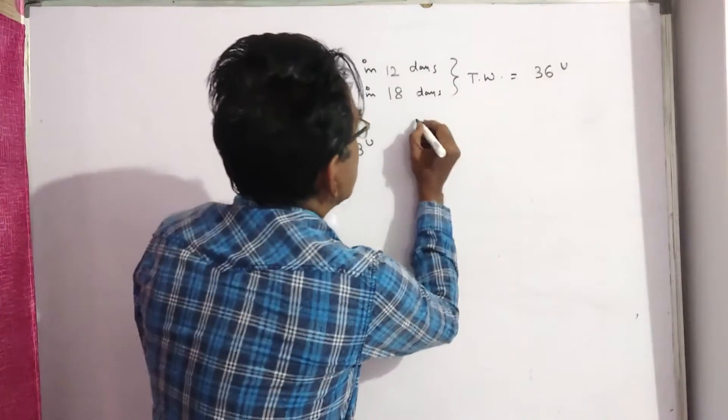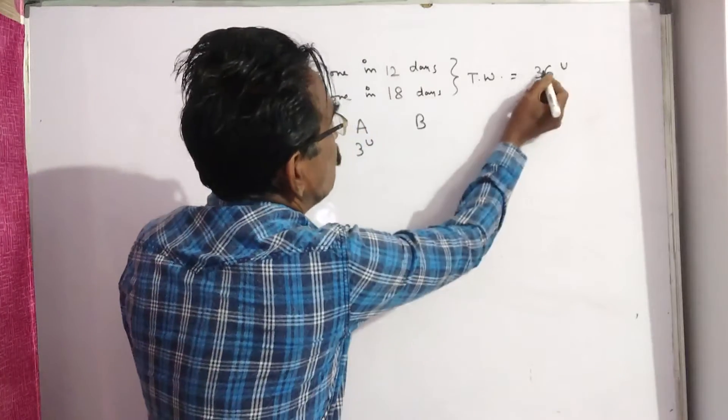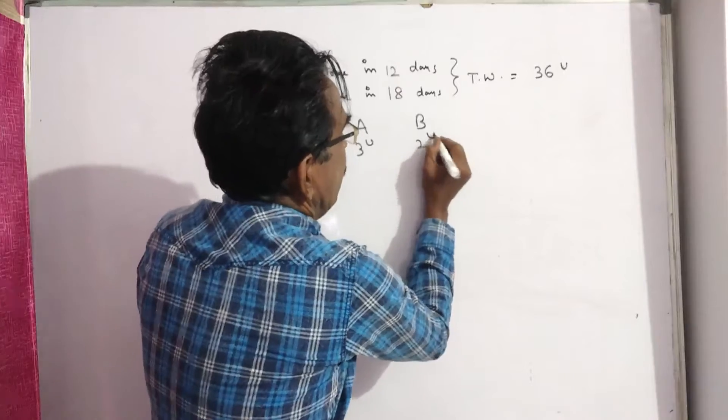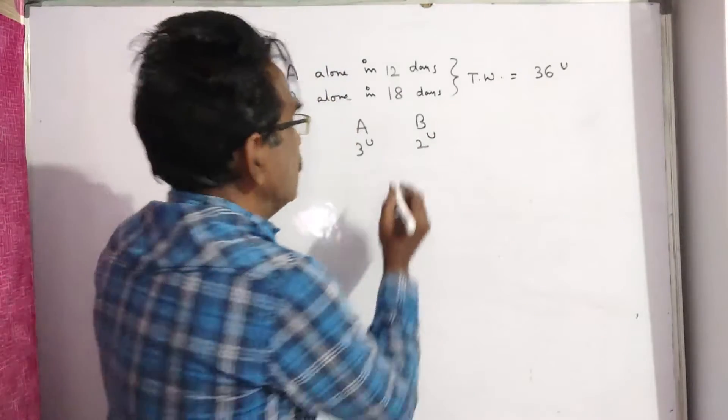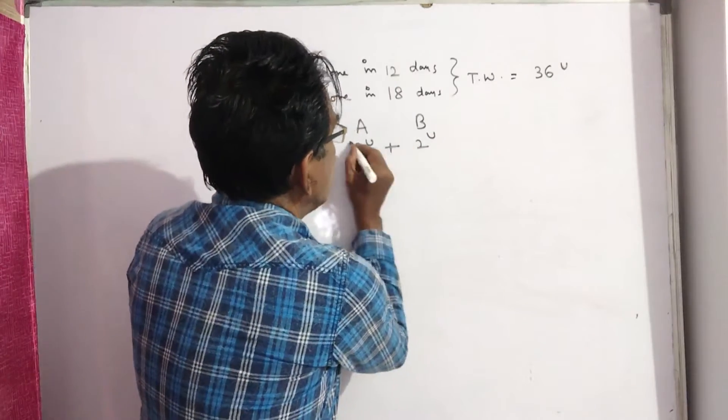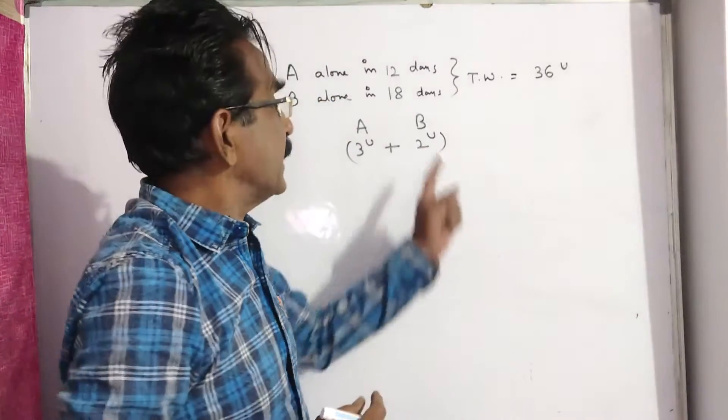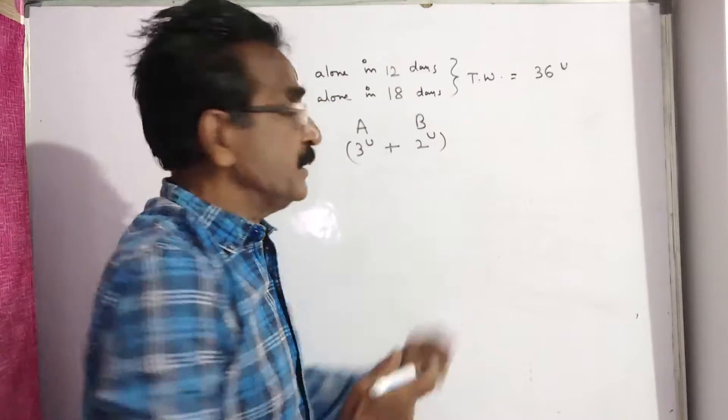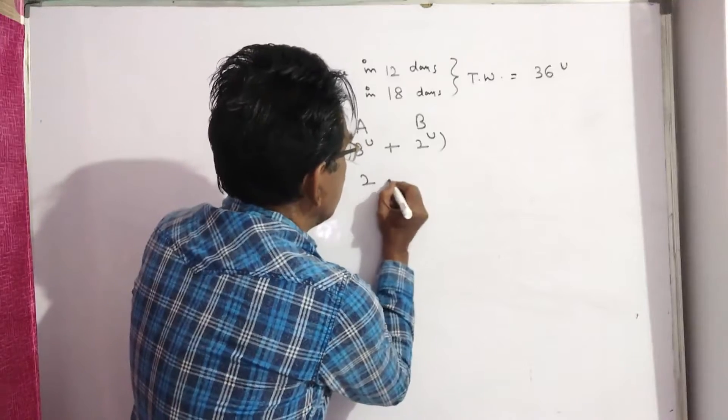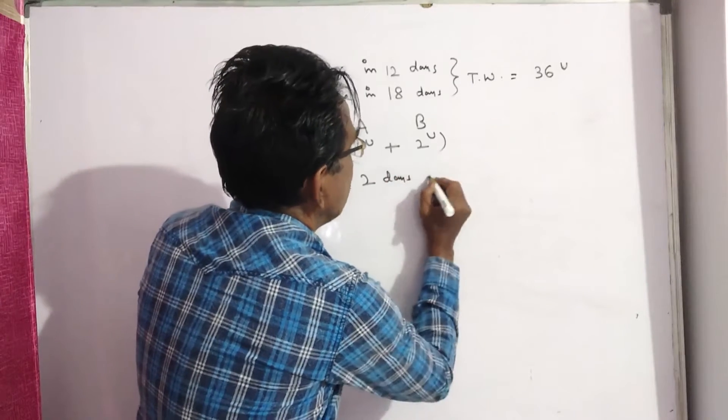Whereas B, 18 twos of 36, does 2 units per day. So first day A comes and does 3 units, second day B comes and does 2 units.